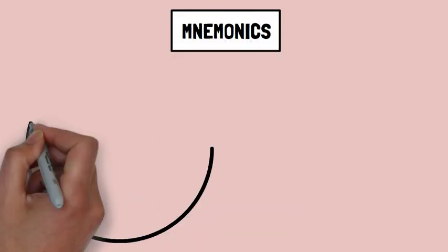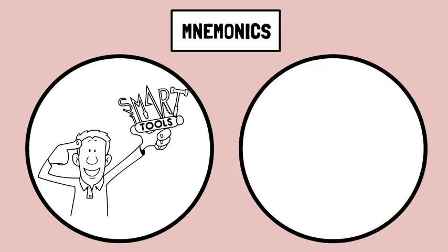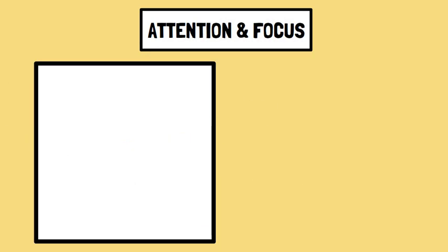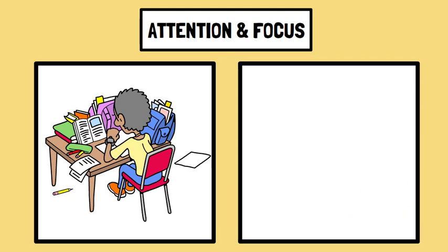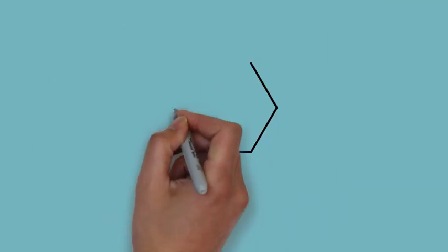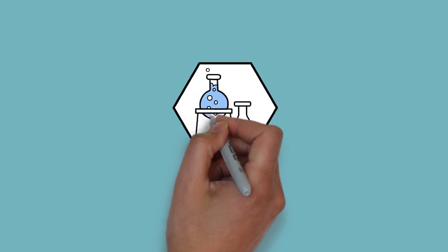Third, mnemonics. Memory aids such as acronyms and rhymes can enhance verbal learning by providing additional cues or associations. Fourth, attention and focus. Concentration on the material at hand is crucial for effective verbal learning. Distractions can hinder the encoding process, making it more challenging to recall information later.